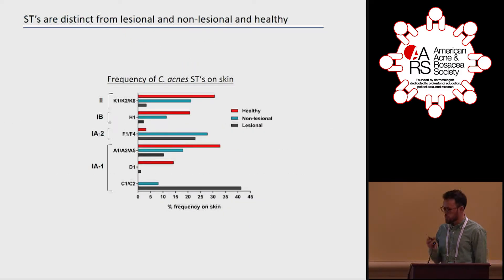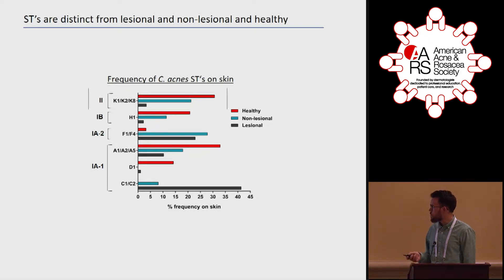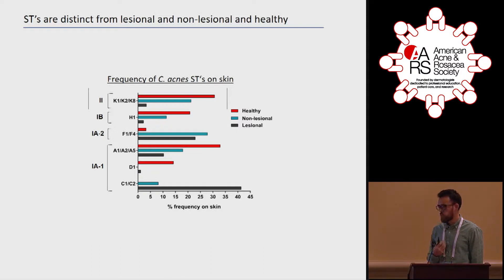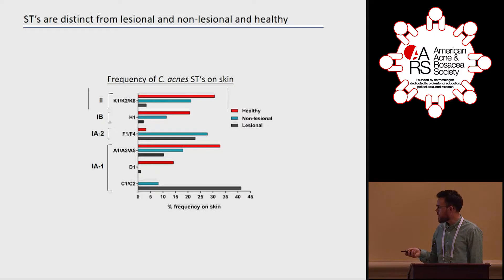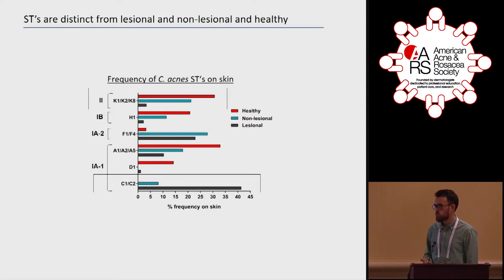Looking at the frequency of C. acnes found on the skin: on the left are the four major phylotypes, and within those phylotypes are the different sequence types we found. The K-sequence types in major phylotype 2 were very frequent on healthy skin but not on lesional acne skin. In contrast, the C1 and C2 sequence types were really frequent on lesional skin but not on non-lesional sites, and we couldn't detect any C1 or C2 sequence types on healthy skin.